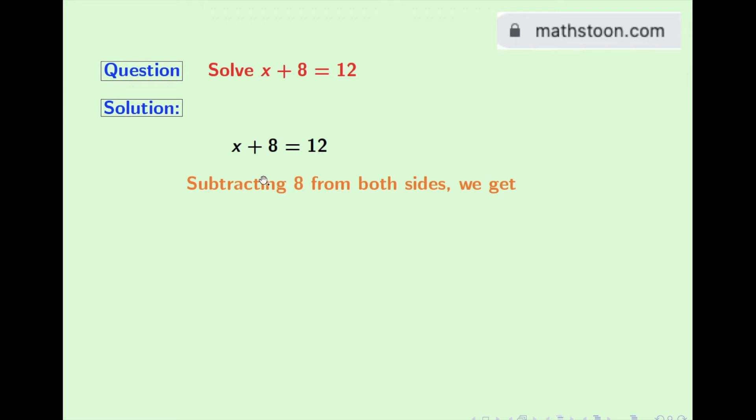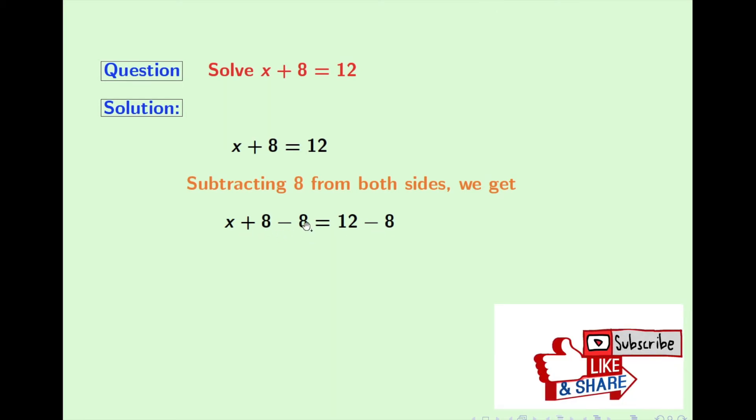Doing that we get x plus 8 minus 8 is equal to 12 minus 8. As 8 minus 8 is equal to 0, so after simplifying the left hand side, we have x.